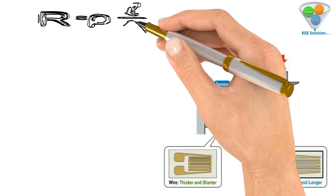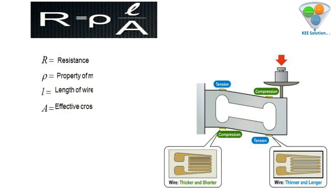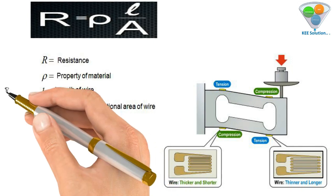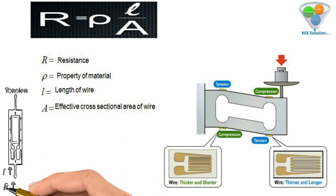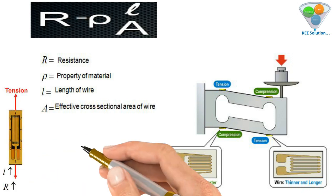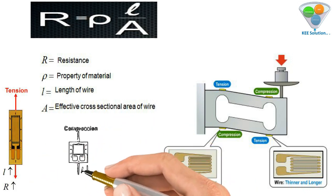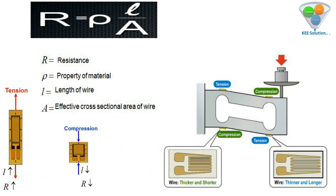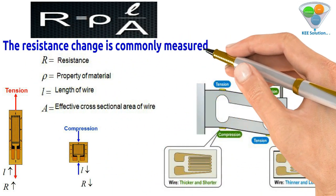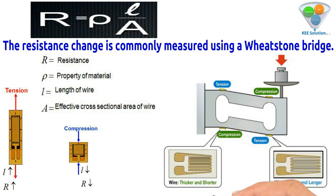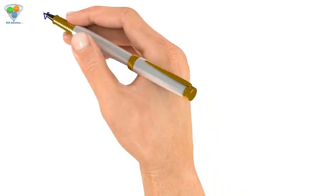If we see the resistance formula: resistance R = ρL/A, where R is resistance, ρ is a property of material, L is the length of the wire, and A is the effective cross-sectional area of the wire. When force is applied, the wire becomes tensile or compressed.